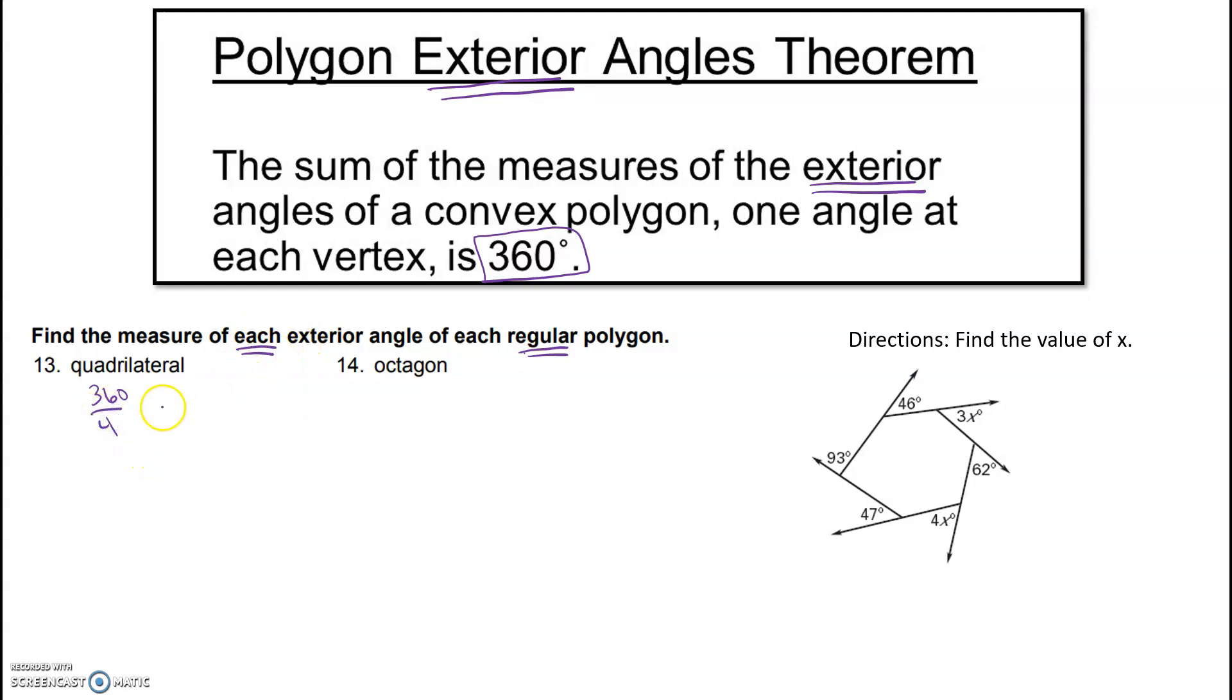So each exterior angle is going to be 90 degrees. Octagon, again since they said exterior, we're going to take that 360 degrees and we're going to split it eight ways because we have an octagon. 360 divided by 8, and each one's going to get 45 degrees. So again, exterior is a lot easier, always add up to 360.